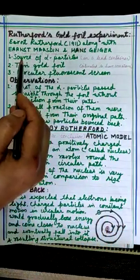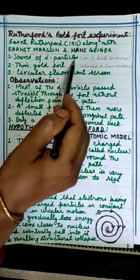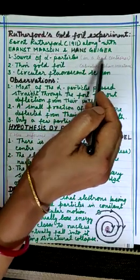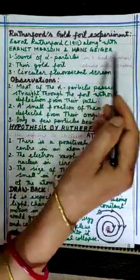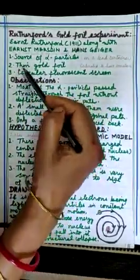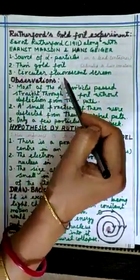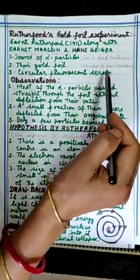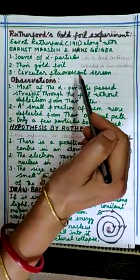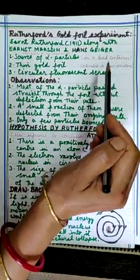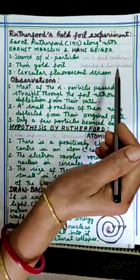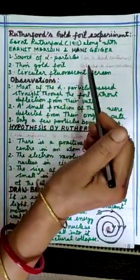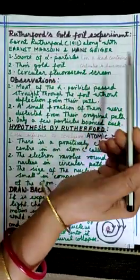Three main parts of the experiment are: source of alpha particles capped in a lead container with a very small opening so that alpha particles move in a straight line path; second, very thin gold foil; third, circular fluorescent screen so that every alpha particle that strikes on it would produce a spark and can be observed. The full details of his experiment are given in the next video.